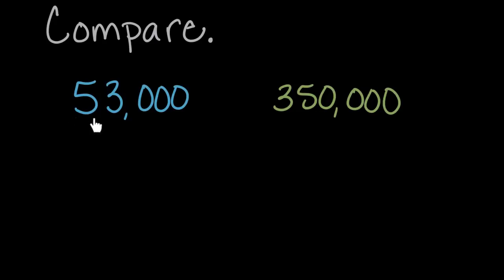This largest place value here, this five, is in the ten thousands place. But the largest place value over here, the three, is in the hundred thousands place. So we are actually comparing 300,000 to 50,000. Those are two different place values.